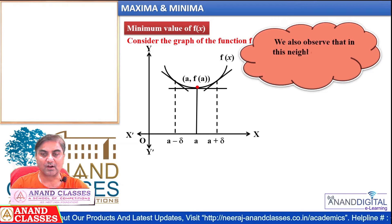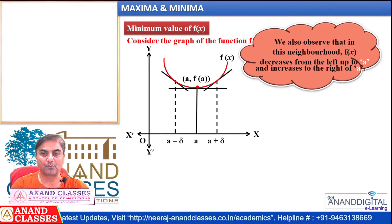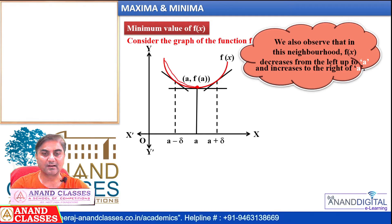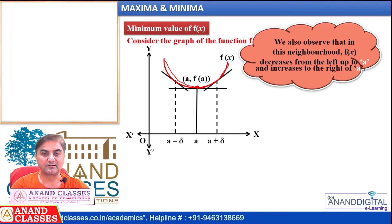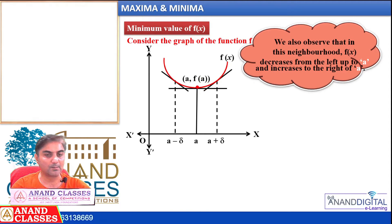We also observe that in the neighborhood of a minimum, f(x) decreases from the left up to a, then increases to the right of a. So at the minimum value, the function is first decreasing, then increasing, and f(a) is the minimum value.